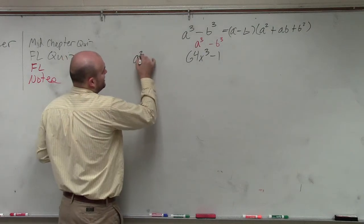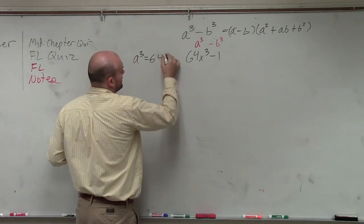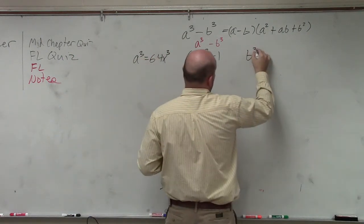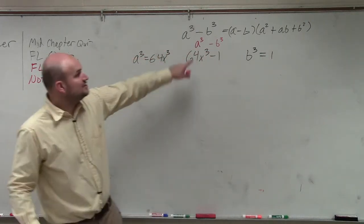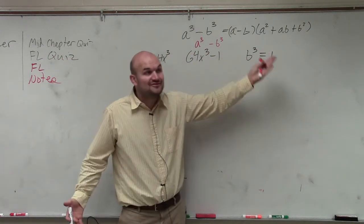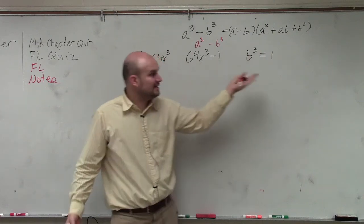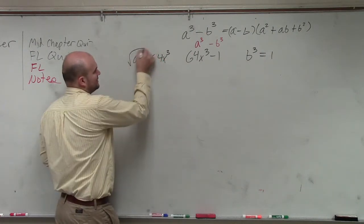So therefore, I'm just going to write a cubed is equal to 64x cubed, and b cubed is equal to 1. So again, to apply the factored form, I have to figure out what is a and what is b. So I take the cube root of both sides.